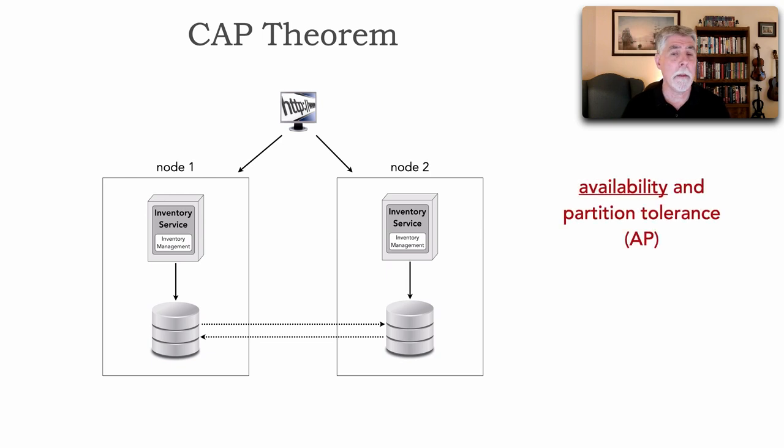Let's talk first about availability and partition tolerance, and that would be AP. So with AP, here's what happens. We lose connectivity between these databases, between the nodes. They can't talk to one another anymore. What AP says, availability and choosing that over consistency, is that any request to either of these nodes will continue to operate and continue to return data. However, unfortunately, it can't guarantee that that data is the latest.